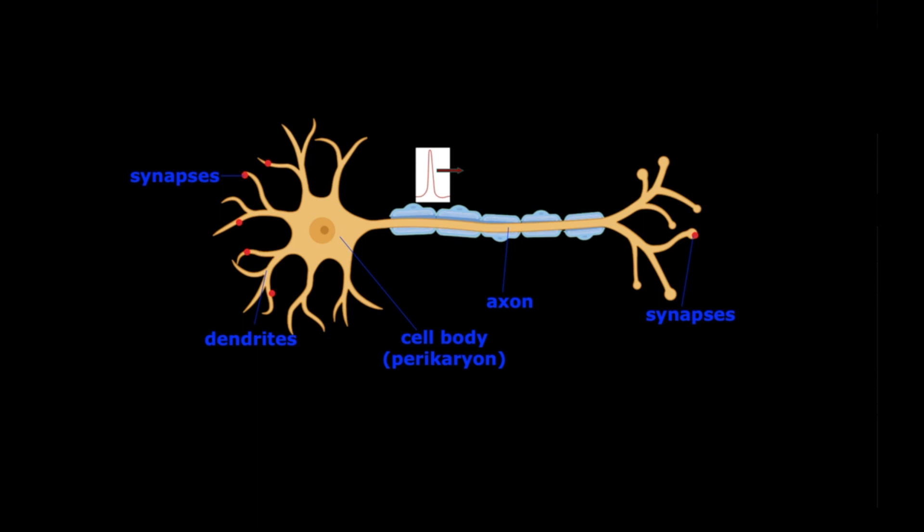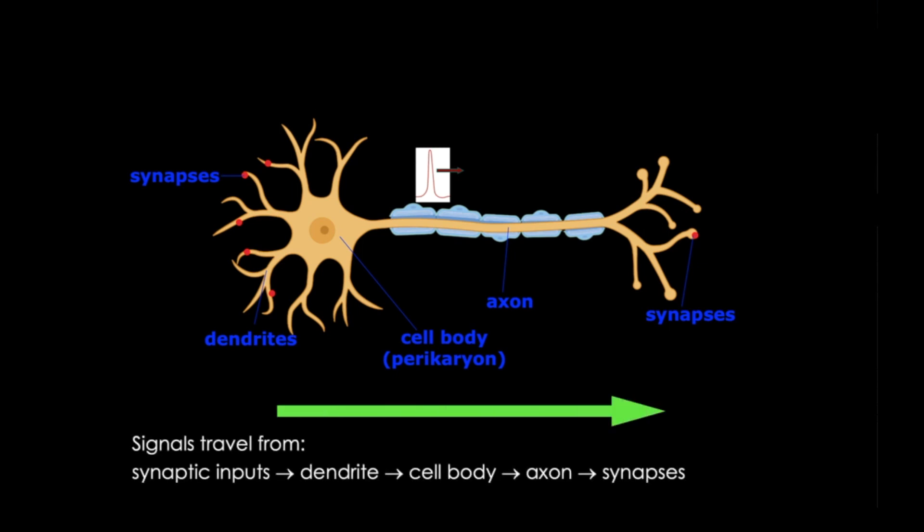So we know that neurons are polarized cells. They have signals that arrive at the dendrites, move to the cell bodies, and then to the axon to be transmitted to other cells. So this is our generic cartoon.